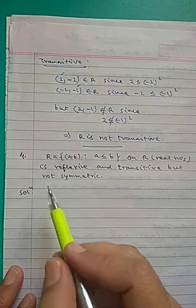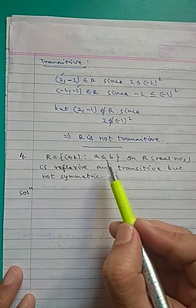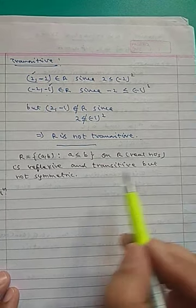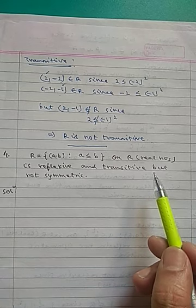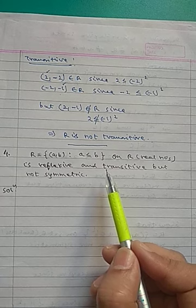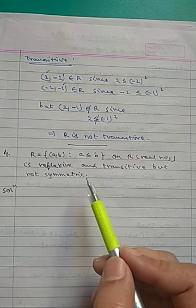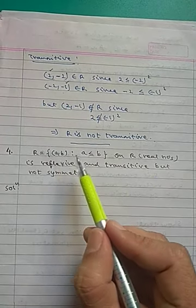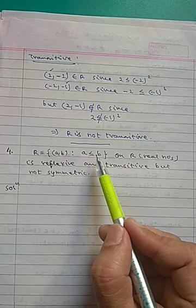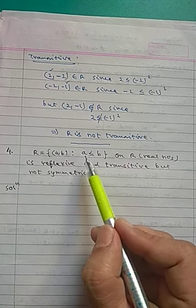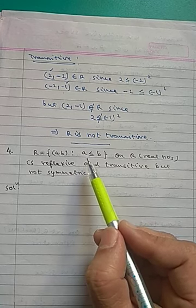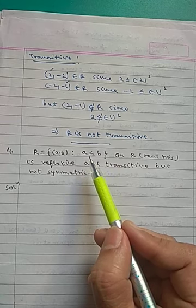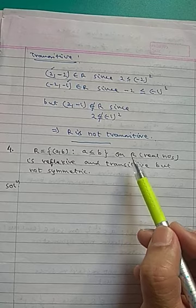Next, question 4: R is the set of all (a,b) such that a ≤ b. This relation R is defined on ℝ (set of real numbers). We need to show R is reflexive and transitive but not symmetric. For reflexivity, (a,a) must belong to R for all a in ℝ. Any real number satisfies a ≤ a, for example 1 ≤ 1, 2 ≤ 2, 1/2 ≤ 1/2. So R is reflexive.